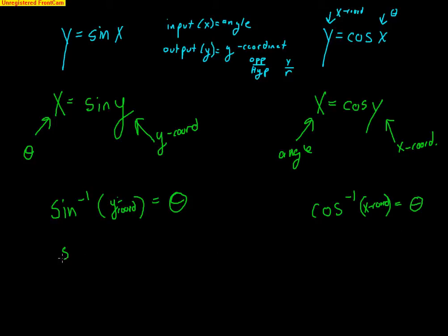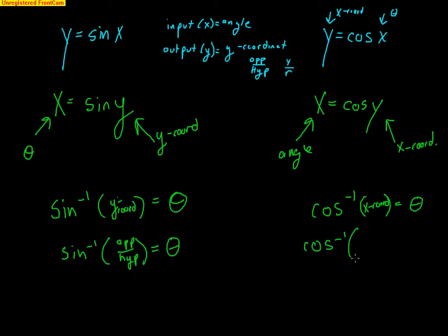Cosine inverse takes in the x-coordinate and spits out the angle. If you're thinking about triangles, sine inverse takes in opposite over hypotenuse and gives out the angle. Cosine inverse takes in adjacent over hypotenuse and spits out the angle.